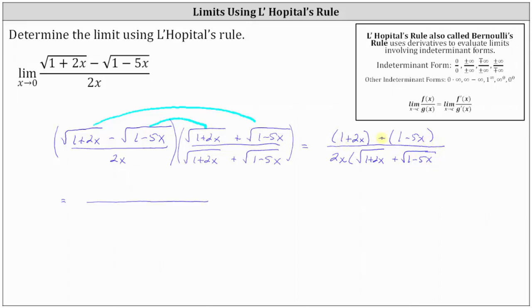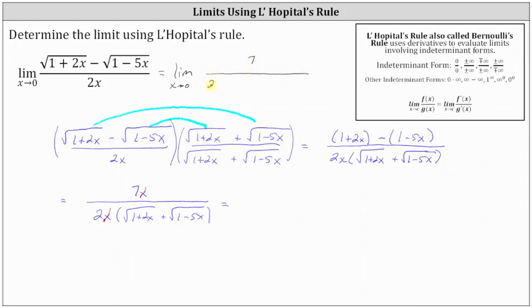Simplifying the numerator: we have one minus one, which is zero, and then two x minus negative five x, which simplifies to seven x. The denominator remains the same. Notice we have a common factor of x between the numerator and denominator, so the original limit equals the limit as x approaches zero of seven divided by two times the quantity square root of one plus two x plus square root of one minus five x.